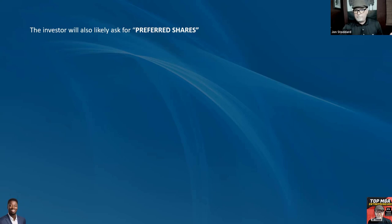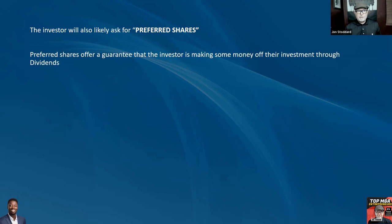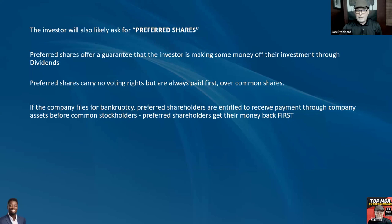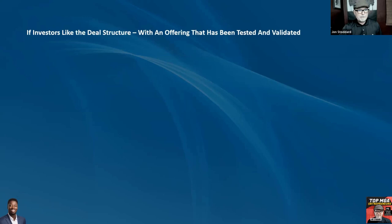Investors will also likely ask for preferred shares. Preferred shares offer a guarantee that the investor is earning money through dividends — around 10%. Preferred shares carry no voting rights, but are always paid first over common shares. This shows investors you care about them. If things go south or bankruptcy occurs, they get paid first out of the assets. If the company files bankruptcy, they're entitled to receive their payment first from stockholders.